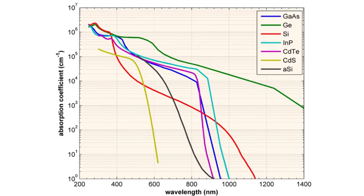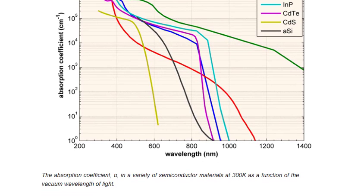The absorption coefficient for several semiconductor materials is shown below. The absorption coefficient, alpha, in a variety of semiconductor materials at 300K is a function of the vacuum wavelength of light.